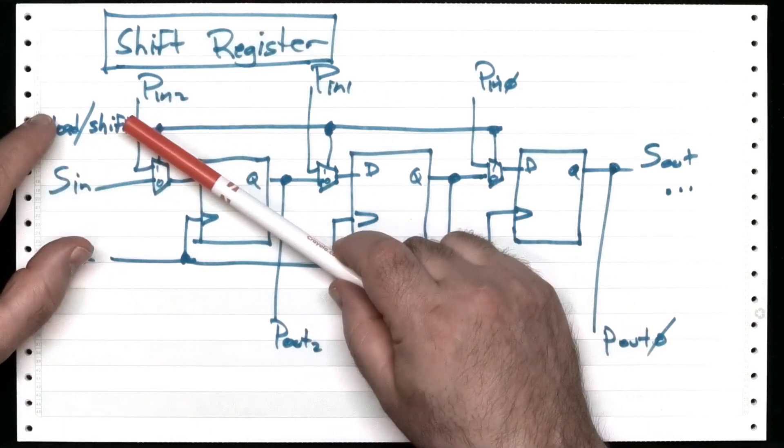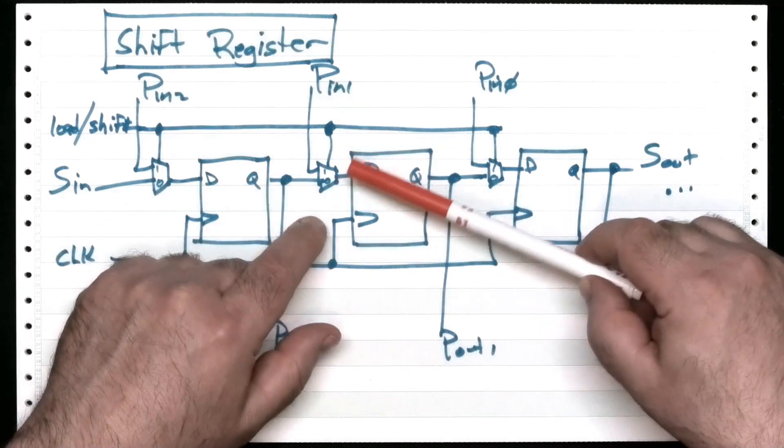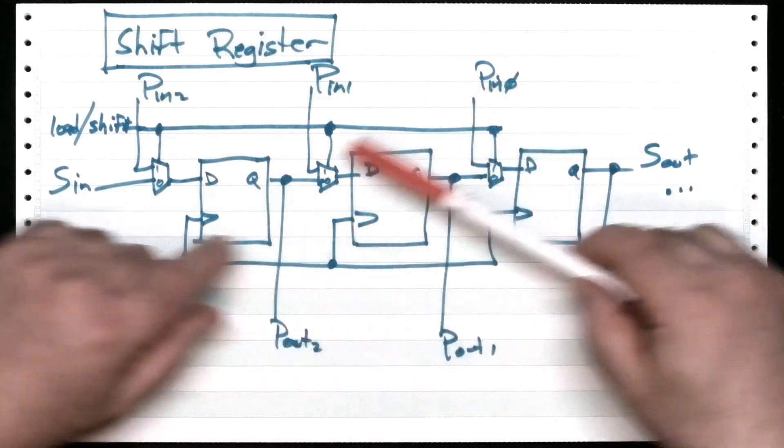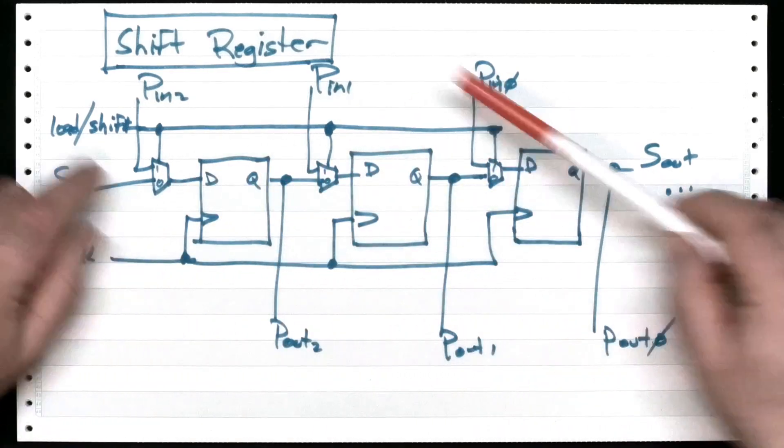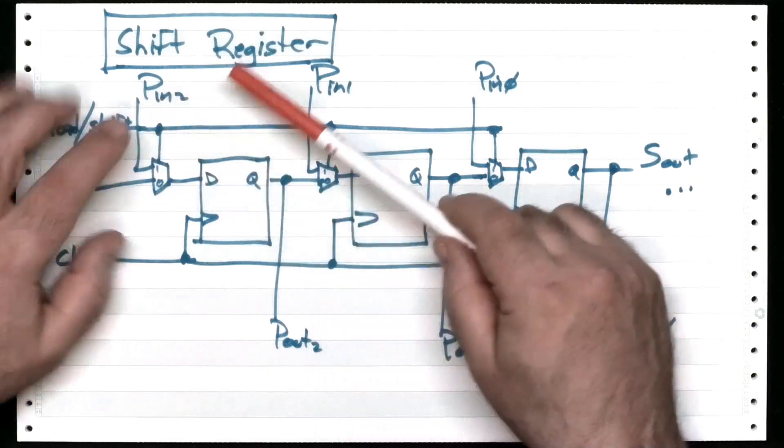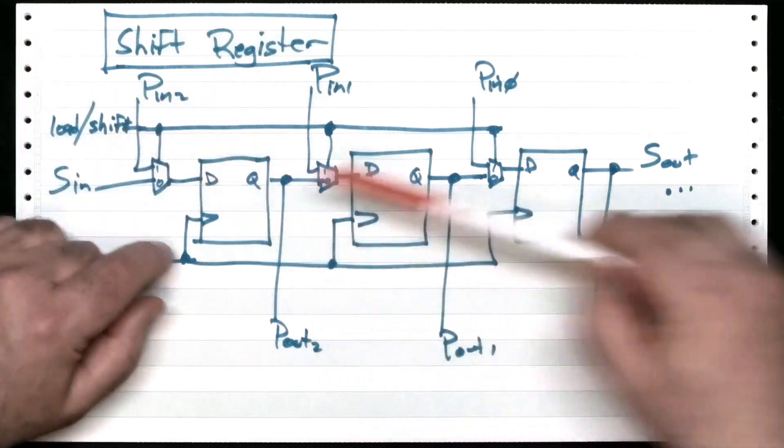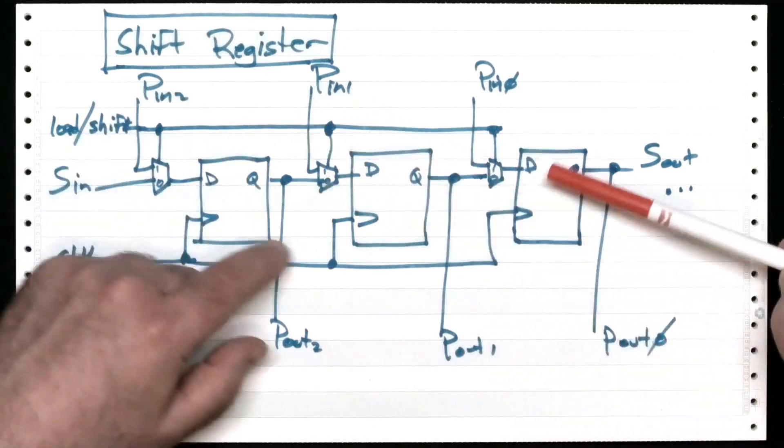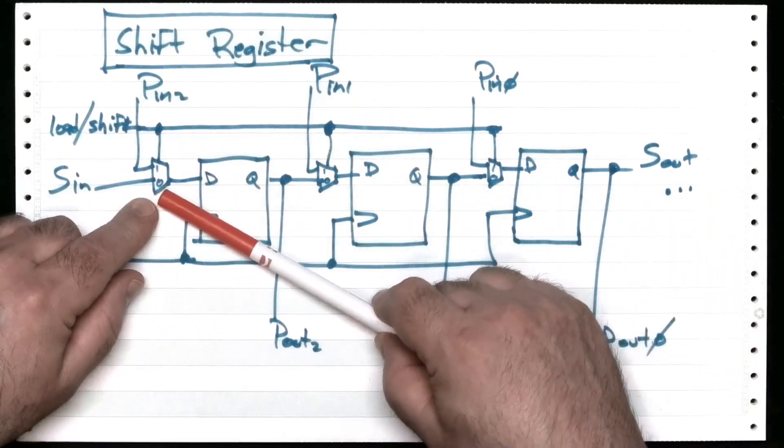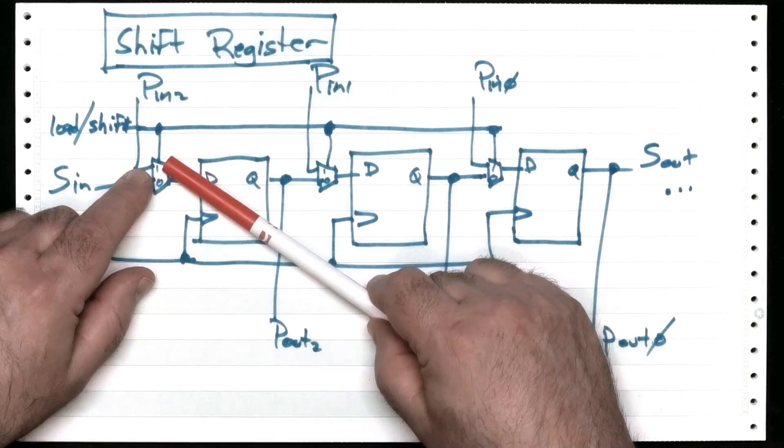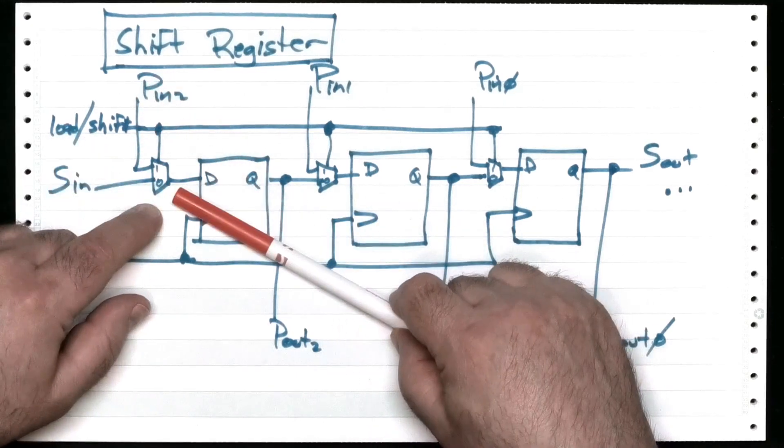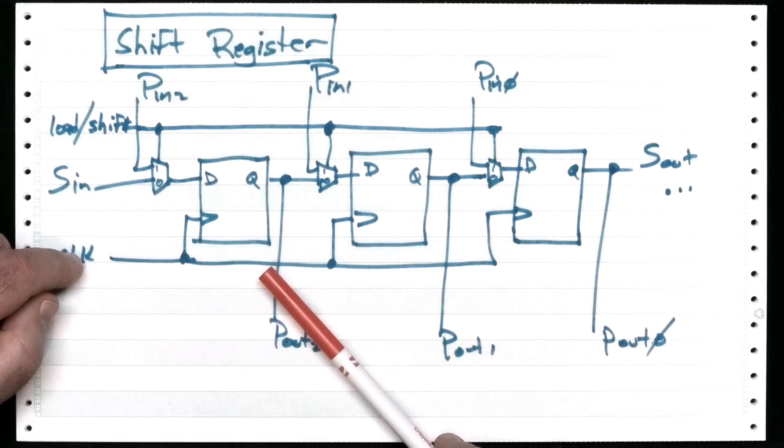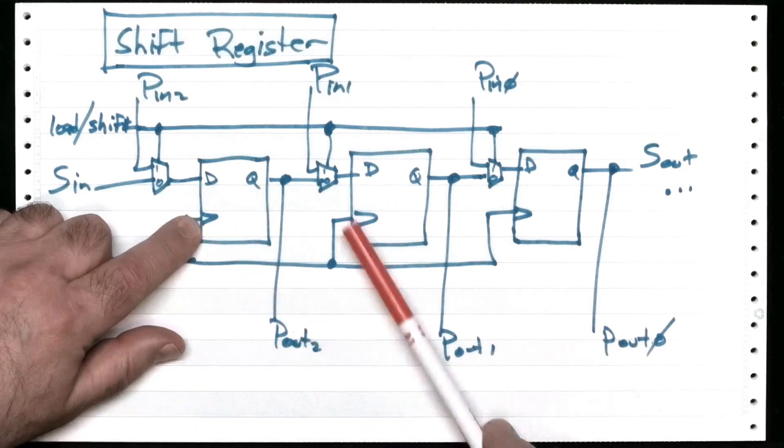So why don't we care about this? Well, this is connected to the address input of these two input multiplexers here. So when this signal is a one, we're loading in parallel. When it's zero, we're shifting. So let's say there's a zero on that. All these muxes are going to read from their zero input. You can see a little zero down there and a little one up on top here. So this is zero. What happens? I had a clock, leading edge clock, leading edge clock.